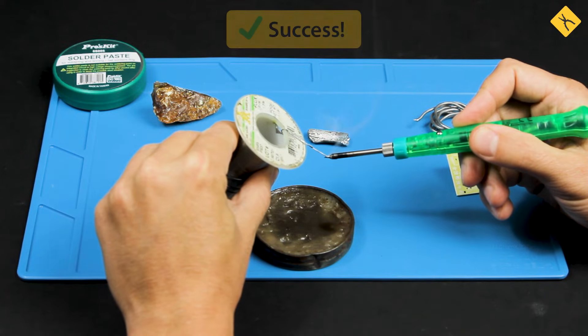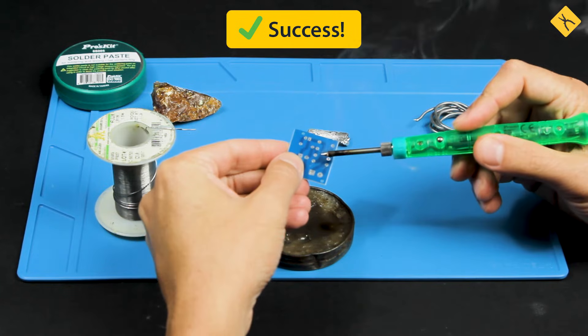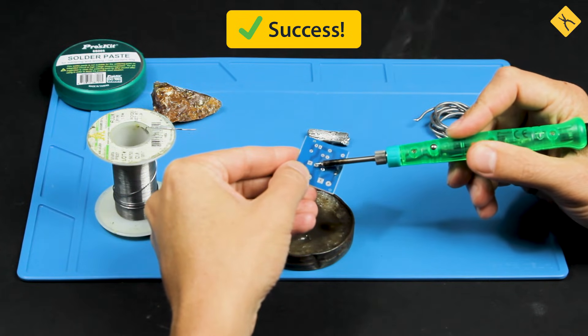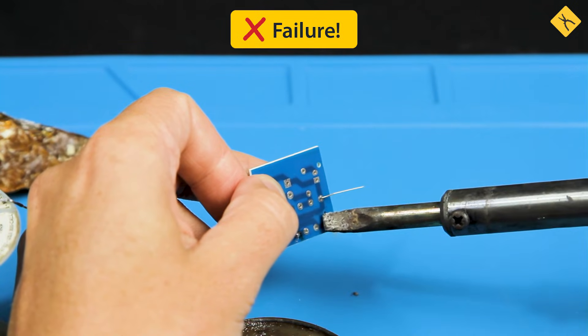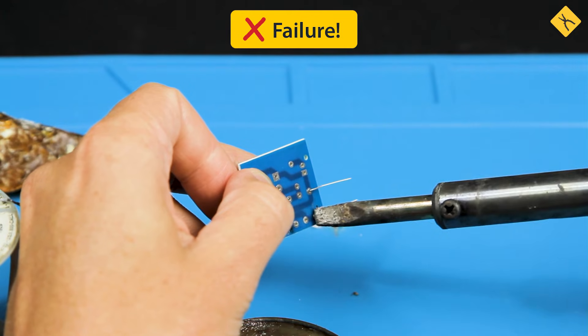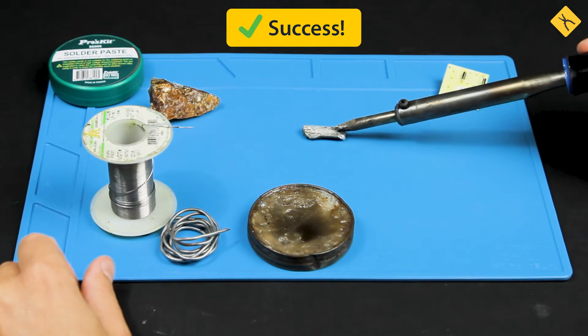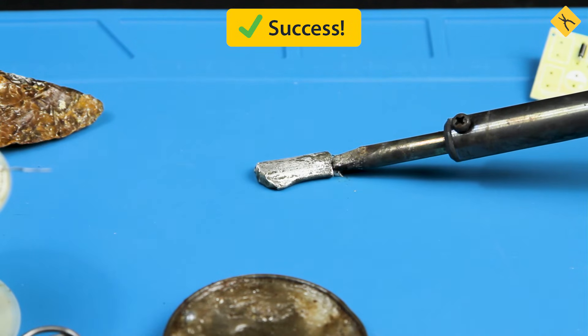Low-power soldering irons with thin soldering tips are best used for desoldering small components on small PCBs. A high-power soldering iron is very useful for melting large chunks of solder or soldering thick stranded wires.